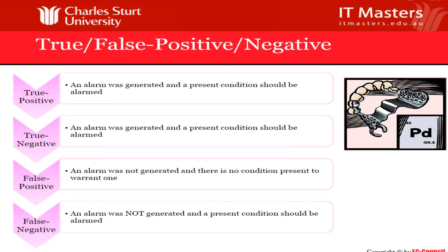True positive is an alarm which is generated and presents a real condition — there is an alarm, and it's true. True negative is basically an alarm is generated and a present condition should be alarmed. False positive is an alarm that was generated but there is no real condition present — basically, it's wrong and not even a threat. False negative is when an alarm was not generated but a present condition should have been alarmed — like the third attack example where you turned off the alarm.